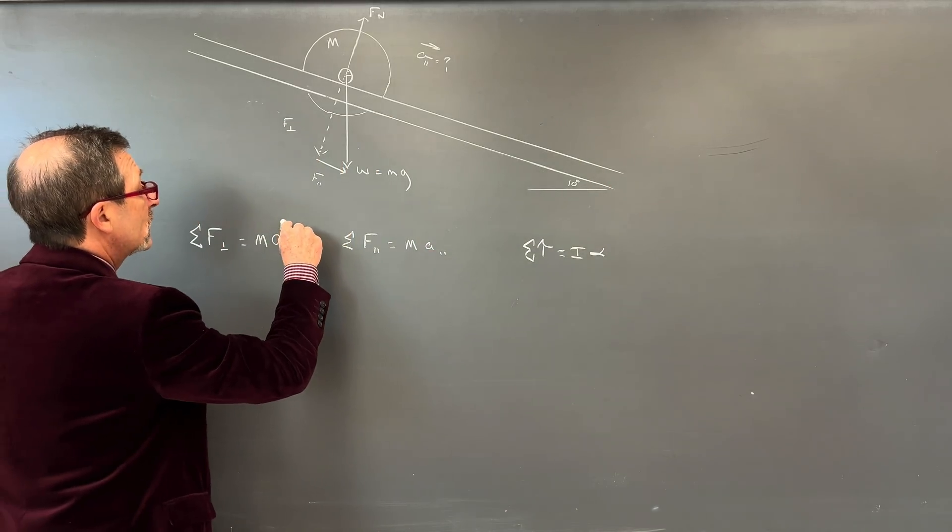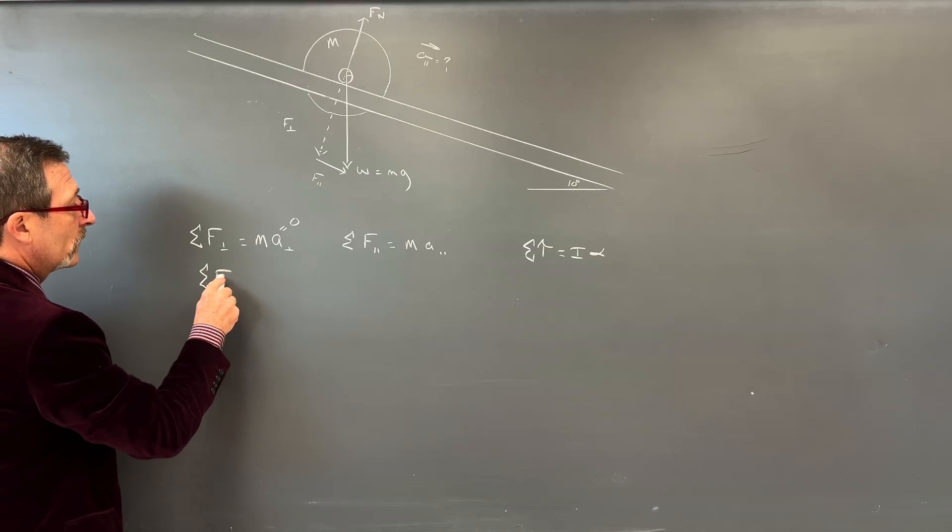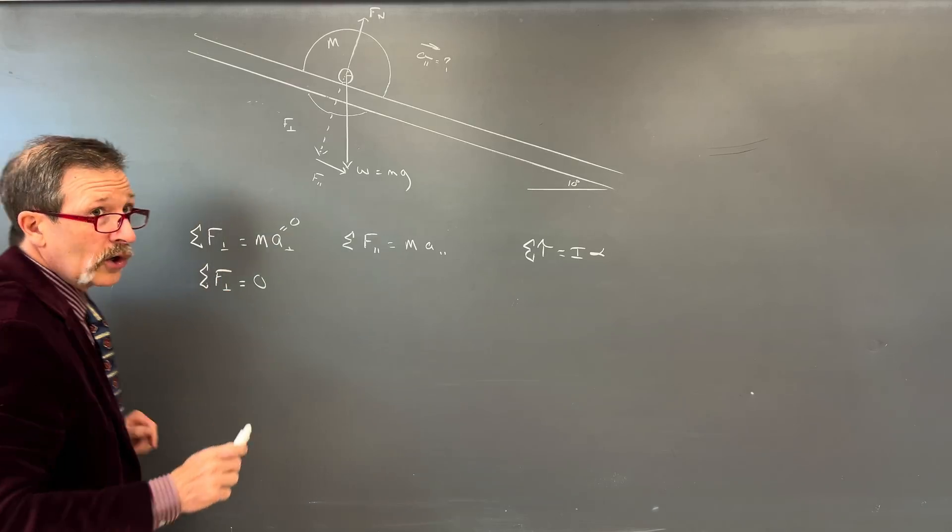Sum of the forces in the parallel equals MA in the parallel. And let's also now do our torque. So I can do the sum of our torques equals my I alpha.